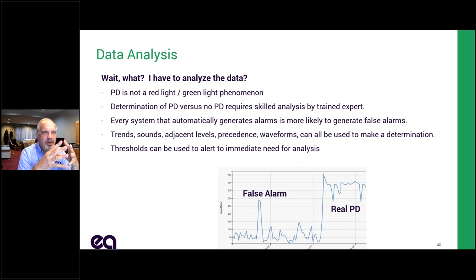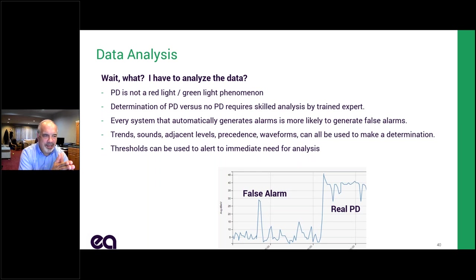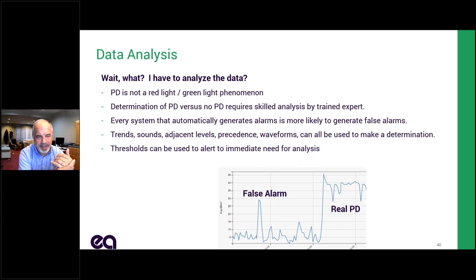Now here's the big thing that everybody gets surprised about: data analysis. People say they just want a red light when they have PD and a green light when they don't. I had a customer today ask for a relay contact to put directly into their SCADA system. I told them I can't help with that — the state of the art in monitoring systems is that we need a human to look at the data. We have hundreds of systems we monitor for customers and hundreds that customers monitor themselves. If anybody tries to put it directly into a SCADA system without any analysis, they're not going to be happy. The system will give you lots of tools and algorithms to help you analyze it, but state of the art for everyone is: you need a human in the loop. If you take anything away from this presentation, remember that.